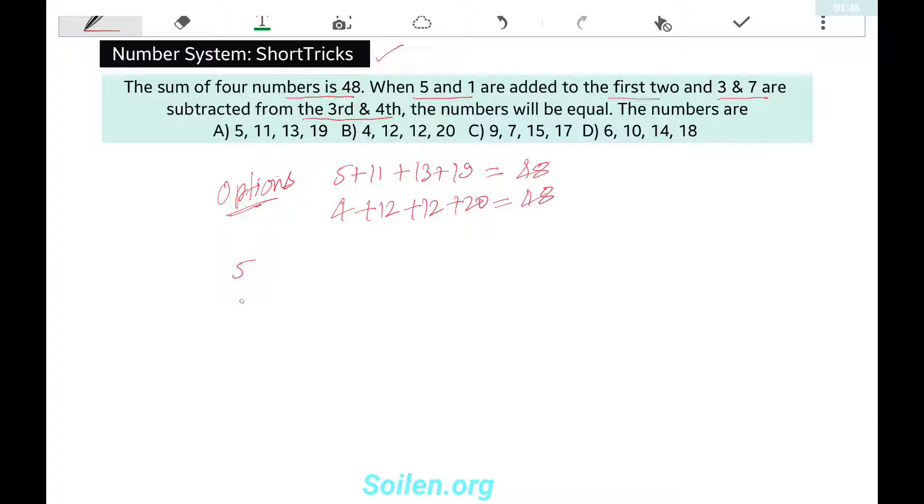5 and 11. If 5 and 1 are added: 5 added and 1 added. 5 plus 5 is 10, and 11 plus 1 is 12.